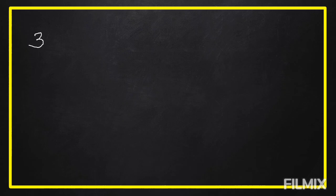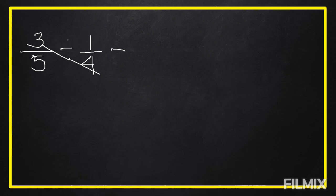Next example: three-fifths divided by one-fourth. We're going to use another way of getting the quotient of two simple fractions — cross multiplication. We cross multiply: three times four equals twelve for the numerator. Then for the denominator, five times one equals five. So our quotient is twelve over five.